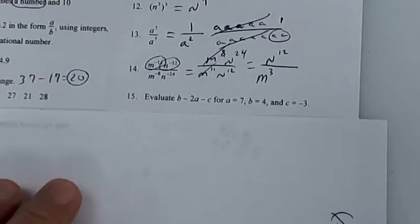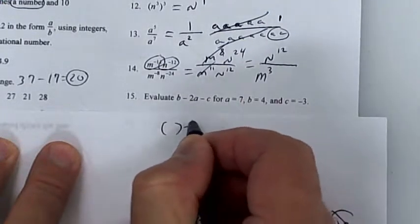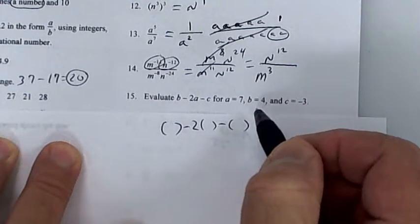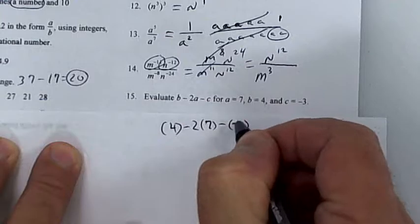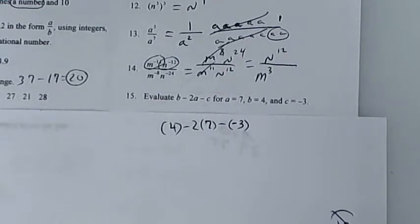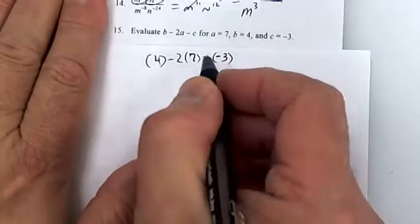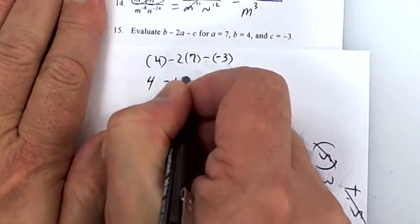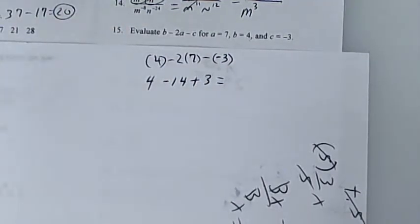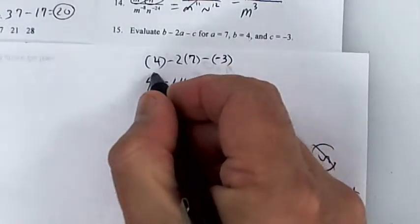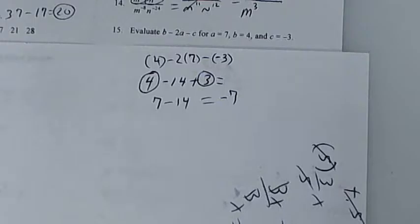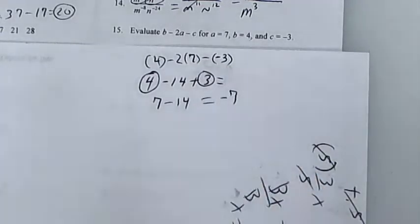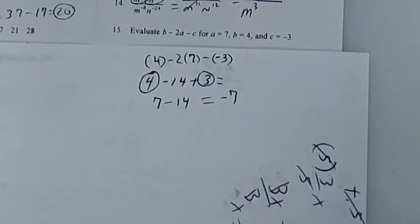Evaluate this expression: b minus 2a minus c. They tell you b is 4, a is 7, c is negative 3. Notice how I put parentheses — that's really important. A negative times a negative makes a positive. So it's going to be 7, and 7 minus 14 on your calculator gives the answer.